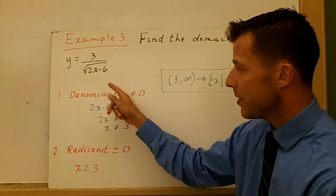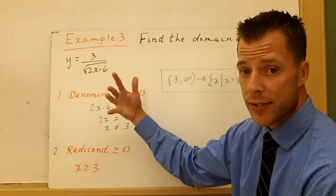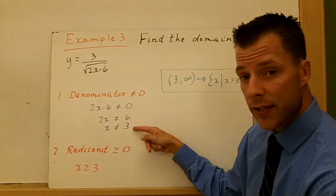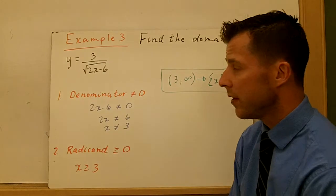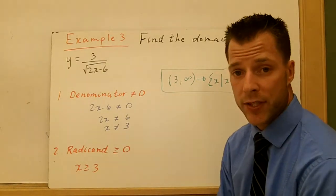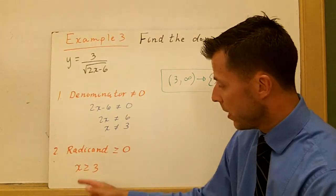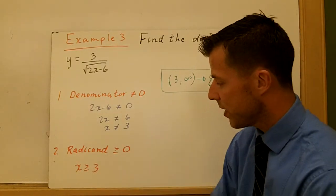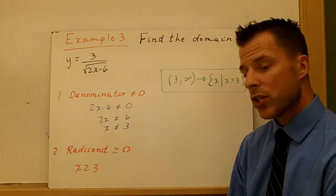If the denominator can't be zero, that means 2x minus 6 can't be zero. So I set that not equal to zero, and I solve for x. So x can't be 3. If x is 3, we have something that's undefined. The radicand has to be greater than or equal to zero, so I took our last answer. x has to be greater than or equal to 3.